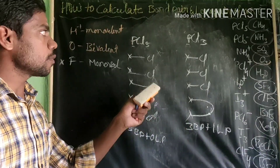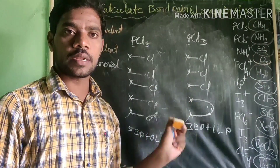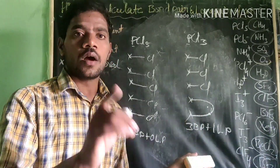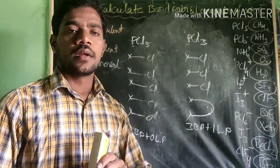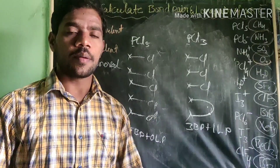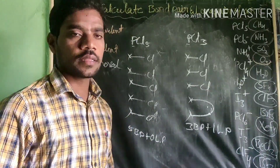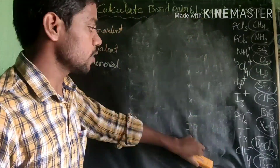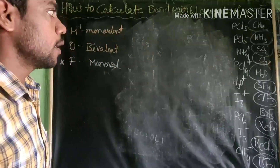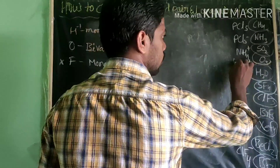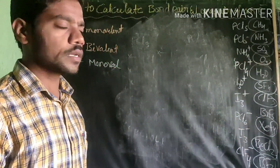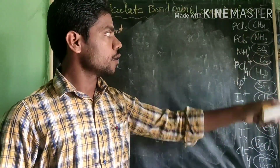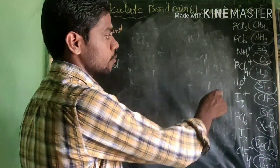You have to understand these concepts perfectly — that is why they ask in examinations about PCl5 and PCl3: how many bond pairs and lone pairs? If you understand this, it is very simple to determine the hybridization of a molecule. So far we have learnt only neutral molecules — now let's go for some charged molecules.